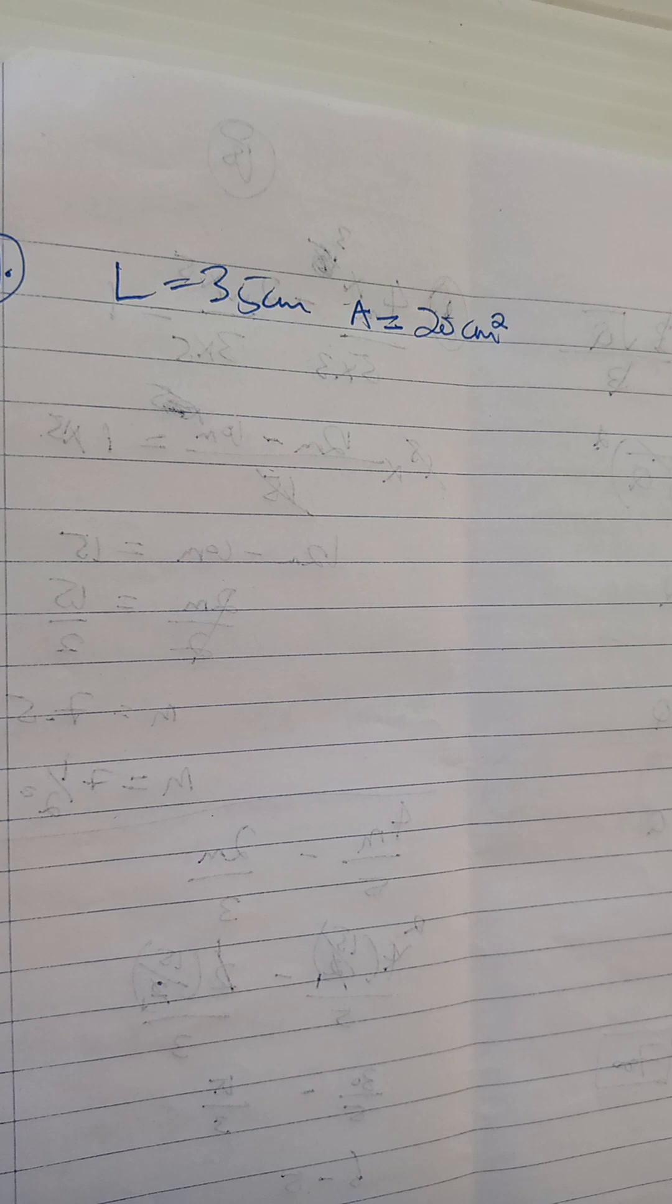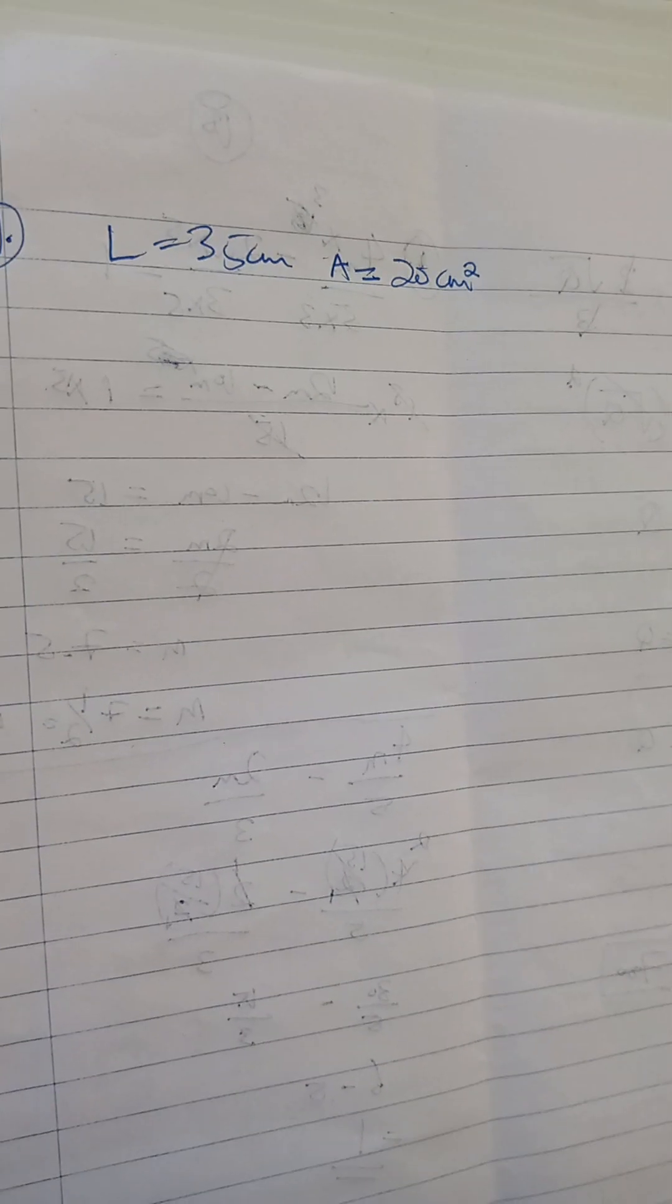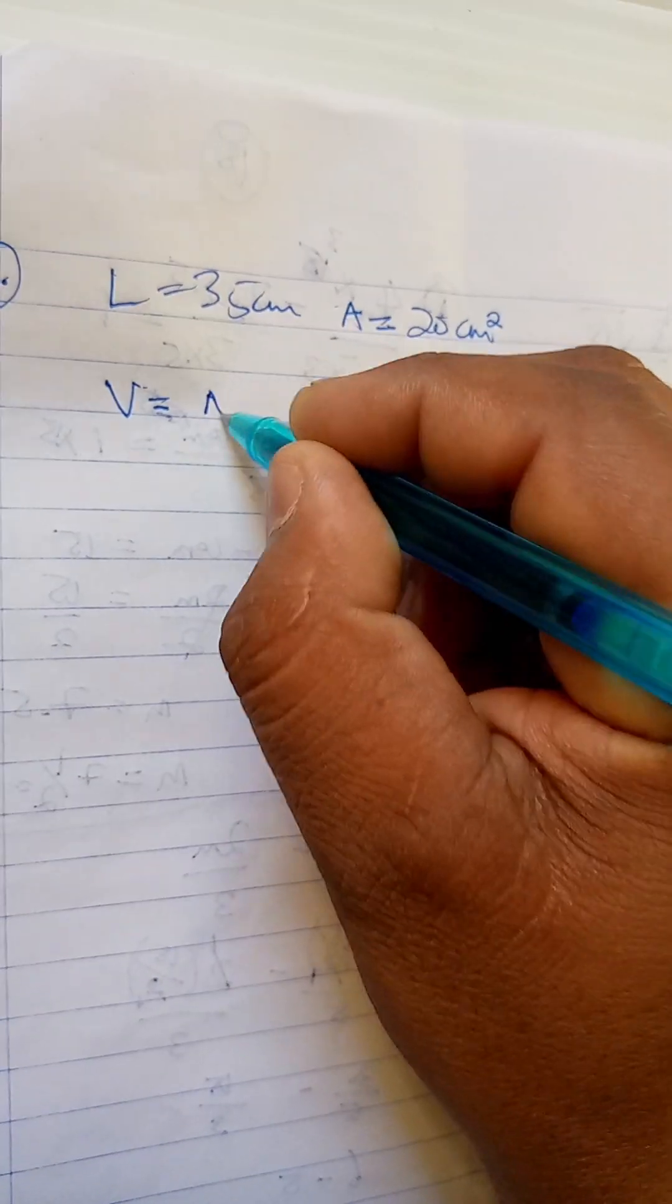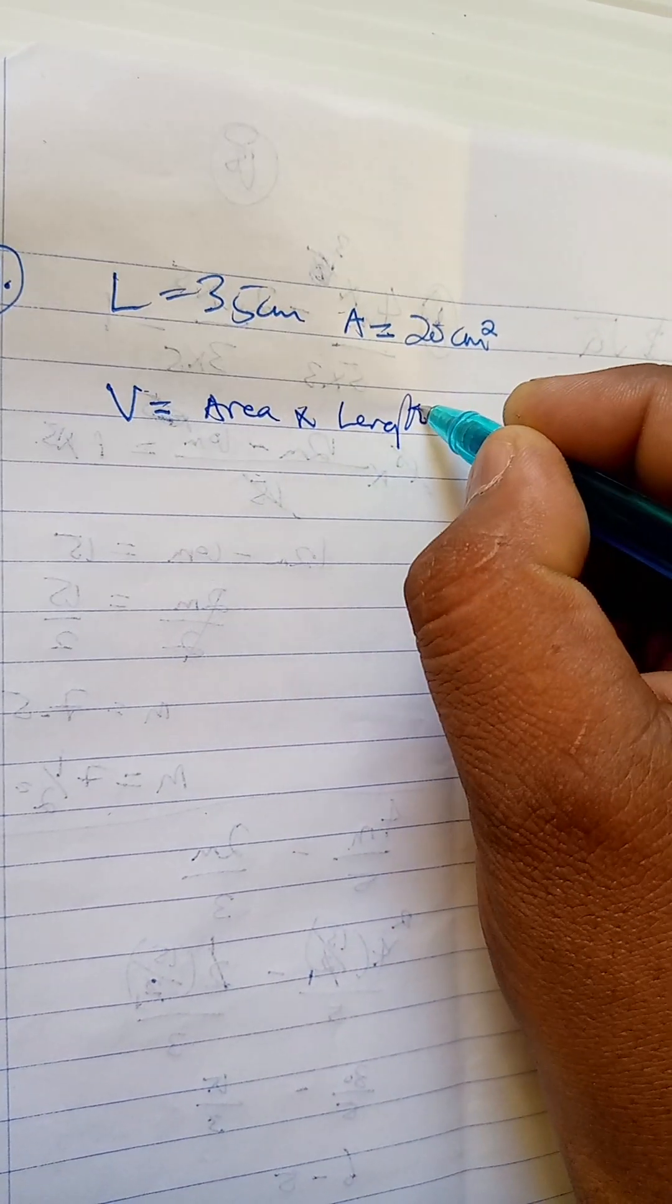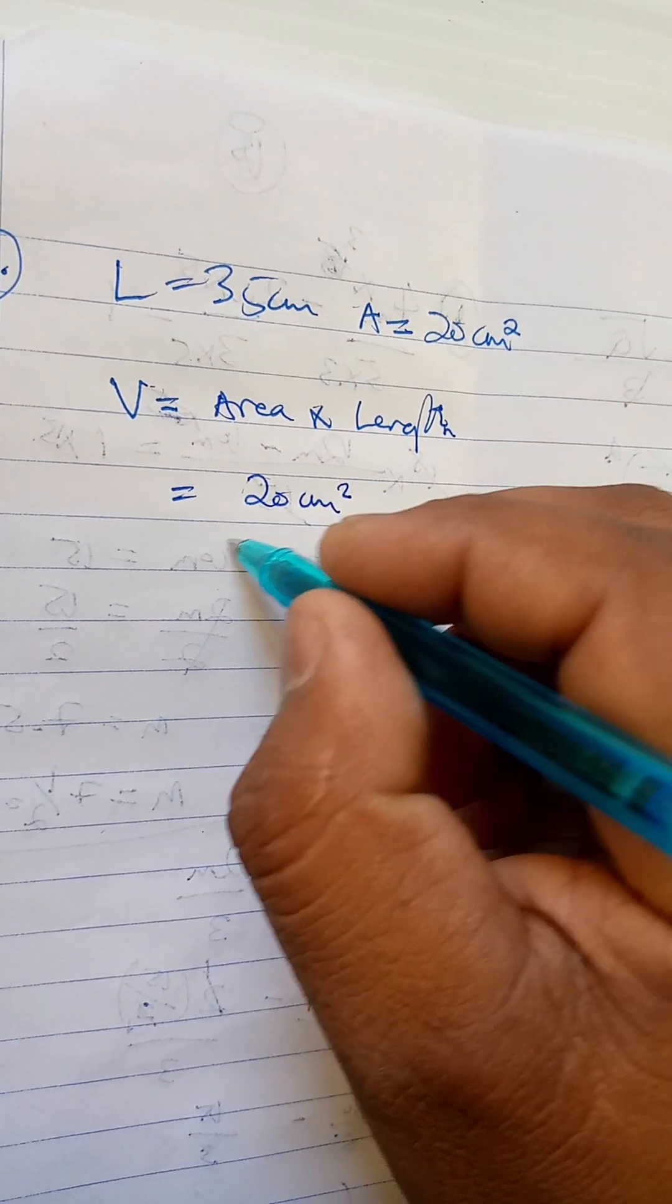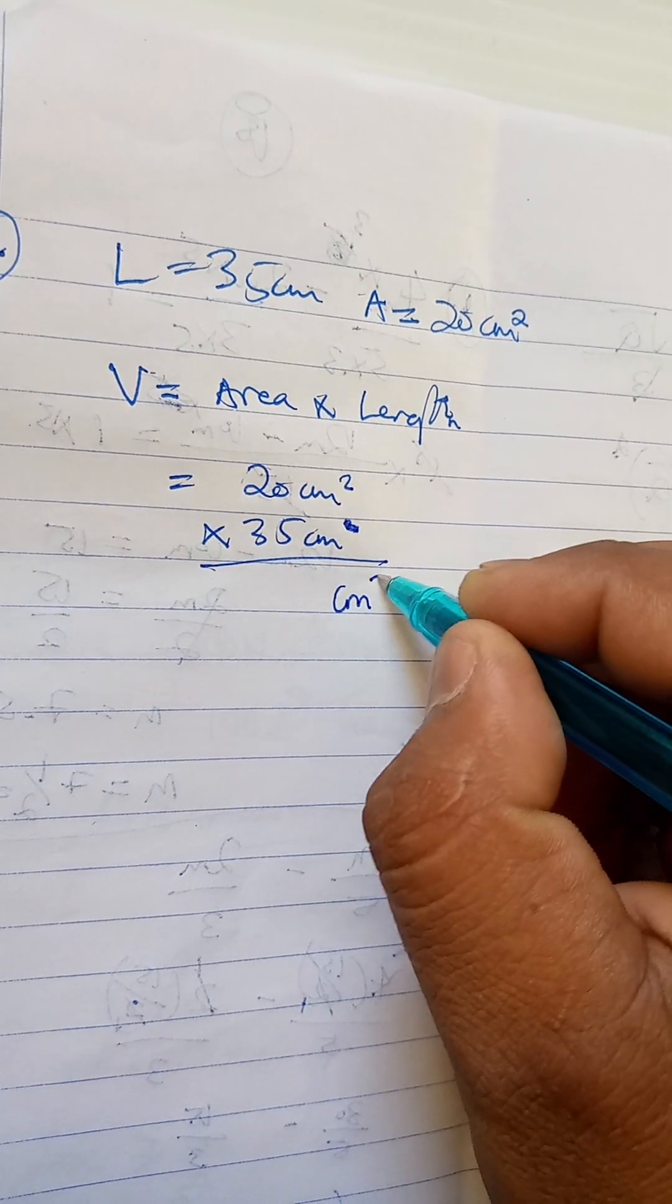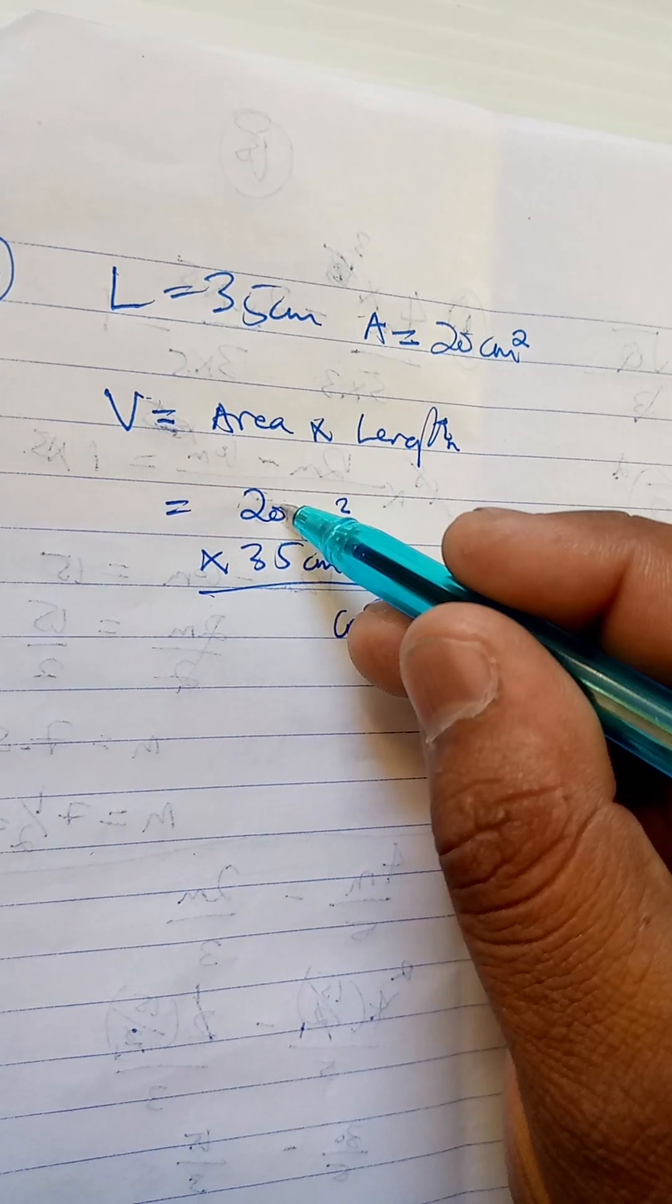Cubed is the volume. So for you to find the volume you have to multiply the area and the length. So it's gonna be 20 square centimeters multiplied by 35 centimeters. So our answer is gonna be in cubic centimeters.